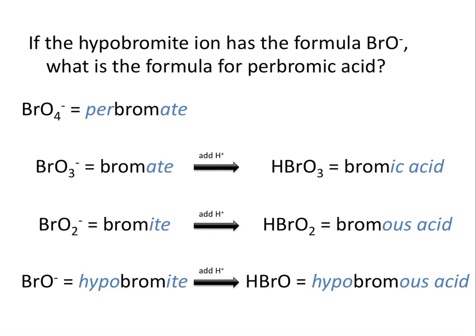If BrO₃⁻ is called bromate, then we know that BrO₄⁻ must be called perbromate. The corresponding acid, HBrO₄, is perbromic acid — retaining the per- prefix and changing the -ATE ending to -IC.